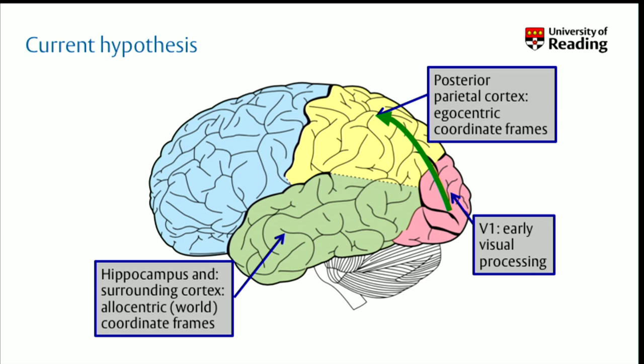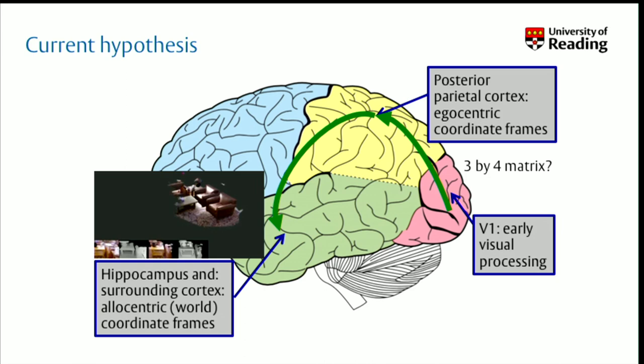How on earth is that supposed to happen? If you were mathematical about it, you'd think: is this a 3×4 matrix? You heard about matrix multiplication in the last talk, going on between V1 and posterior parietal cortex — taking the whole representation built in one place and literally shifting and rotating it before you get to the next place in the brain. Well, no engineer would suggest that, and I don't think it happens. There's certainly no good evidence that that's really what's going on.